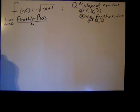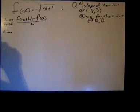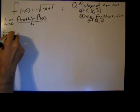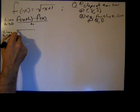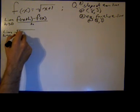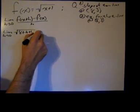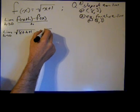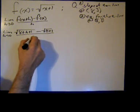In this case, x is 8. So we'll plug in that. This x will be 8. So we'll say the limit as h goes to 0, and the function is the square root of (8+h+1) minus the square root of (8+1) divided by h.